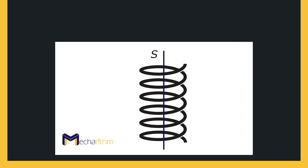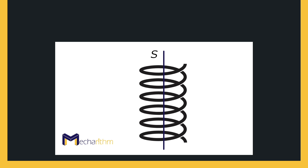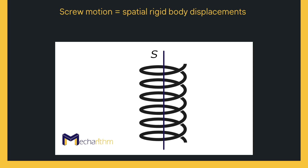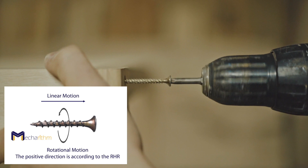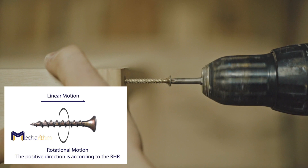Therefore, we can say that all configurations can be achieved by a screw motion, which is a spatial rigid body displacement that comes from the Schultz-Motzi theorem in kinematics. This theorem states that every displacement of a rigid body can be obtained by a finite rotation about and translation along a fixed screw axis, identified by the special letter S. This rotation and translation is called a screw displacement, and this motion is like the motion of a screw that simultaneously rotates about and translates along the same fixed axis.